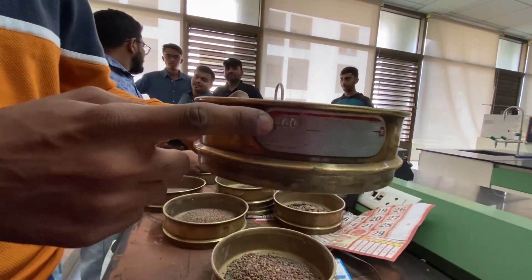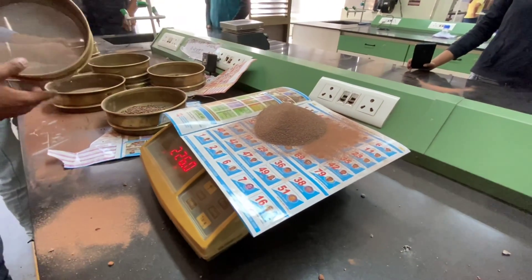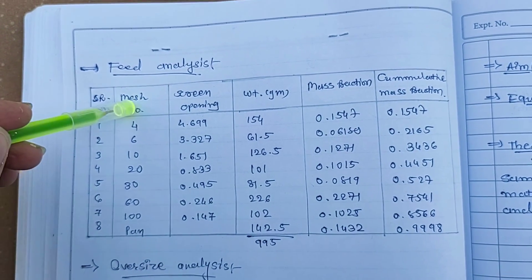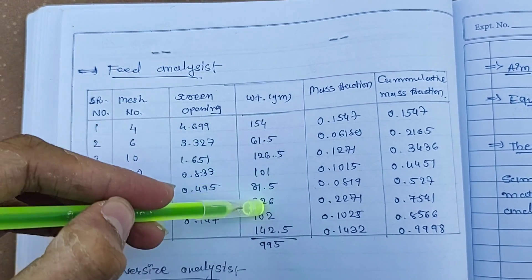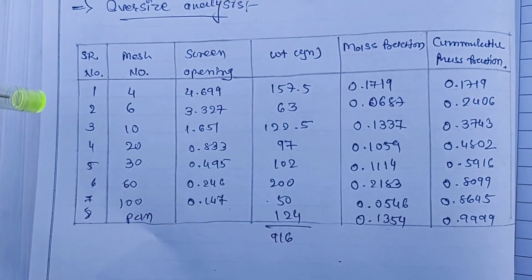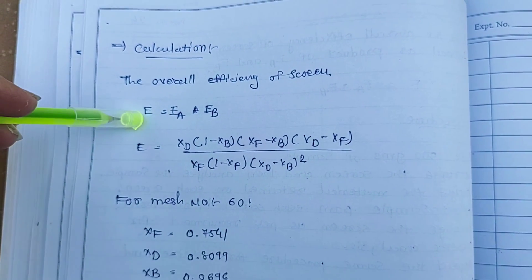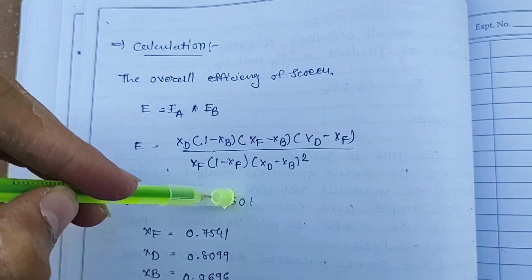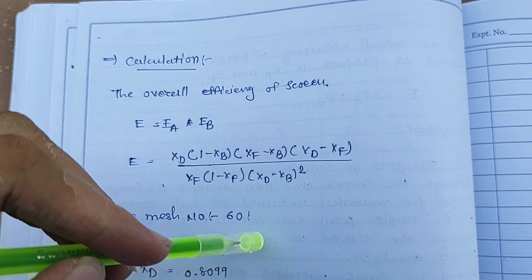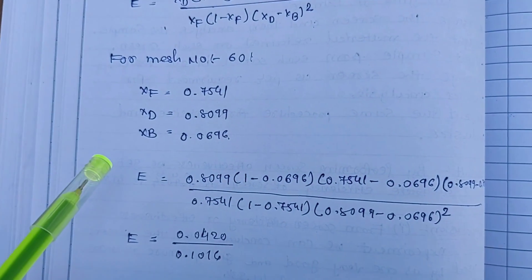We have completed the screen effectiveness experiment. In the observations, the feed analysis table includes mesh number, screen opening diameter, weight, mass fraction, and cumulative mass fraction — similarly for oversize and undersized particles. The equation for screen effectiveness is: E = (xd × (1 - xb) × (xf - xb)) / ((xd - xb) × (xd - xf)) divided by (xf × (1 - xf) × (xd - xb)) whole squared. For mesh number 60, xf is 0.740.